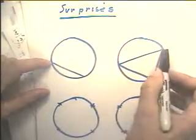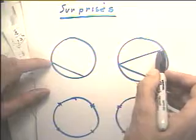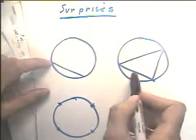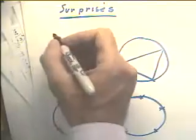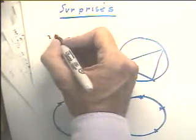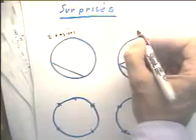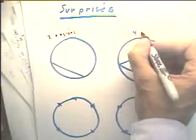If I have three points around the circle and connect those three points with straight lines, I get one, two, three, four regions in the circle. So if I've got two points, I've got two regions. Three points, I've got four regions.